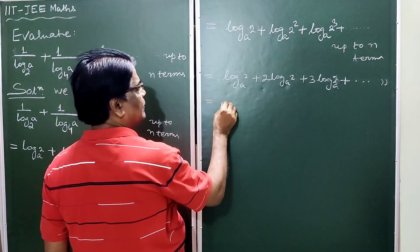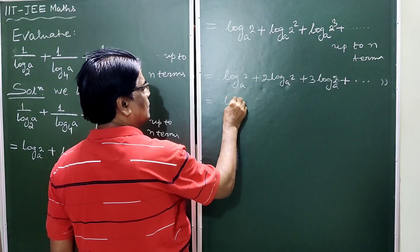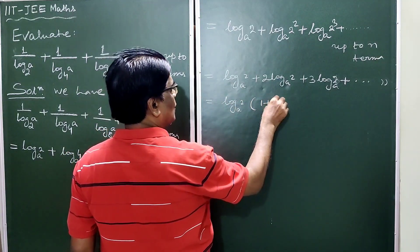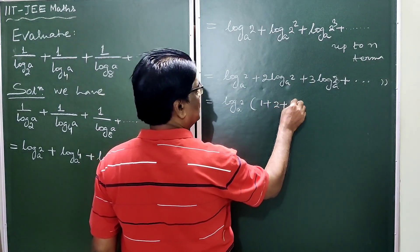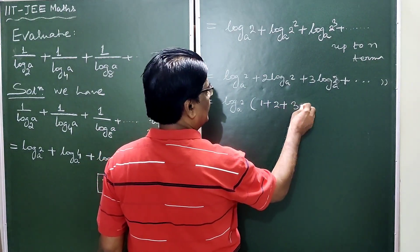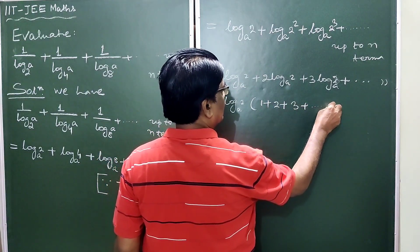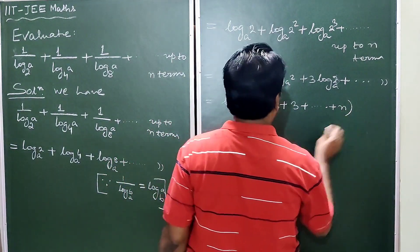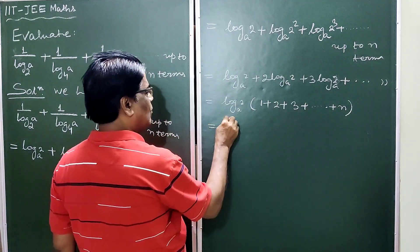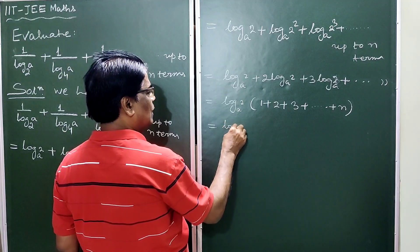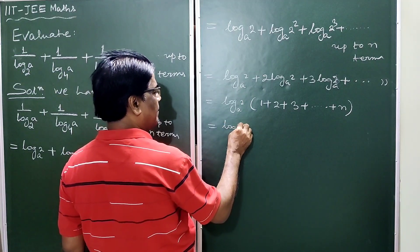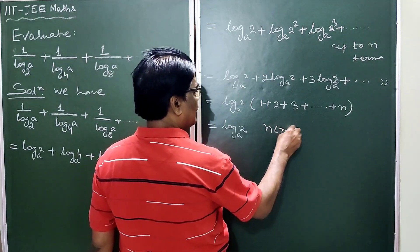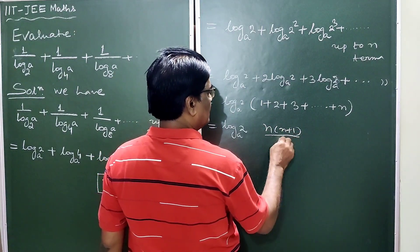This equals log base a of 2, taken as common, multiplied by the sum 1 plus 2 plus 3 plus dot dot dot plus N. This equals log base a of 2 raised to N into N plus 1 by 2.